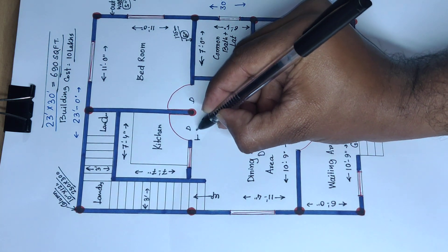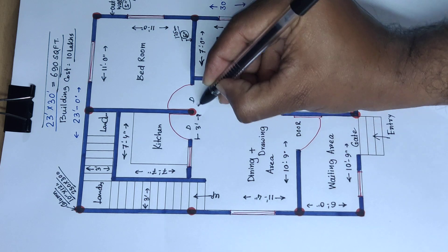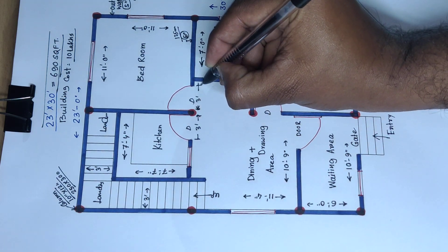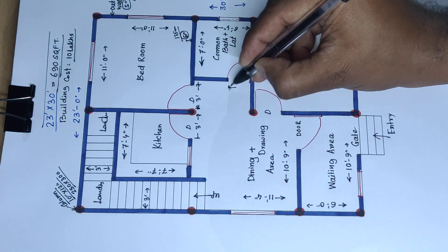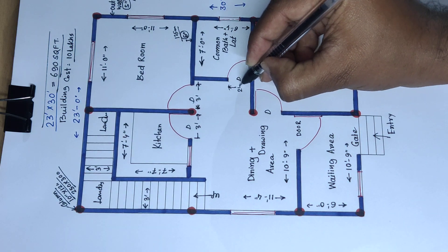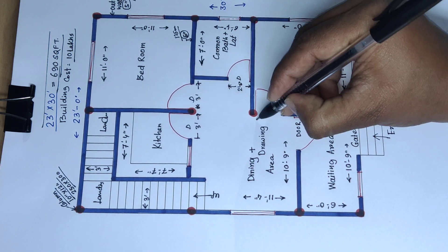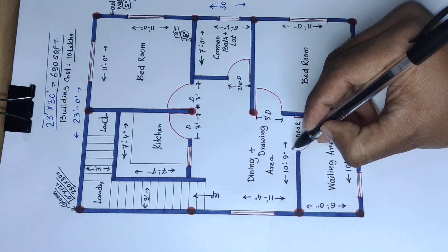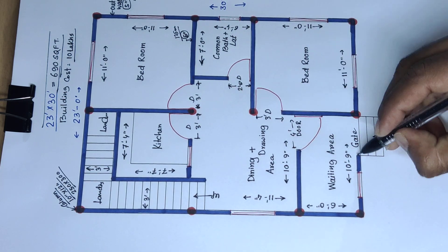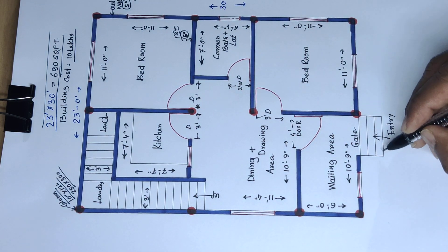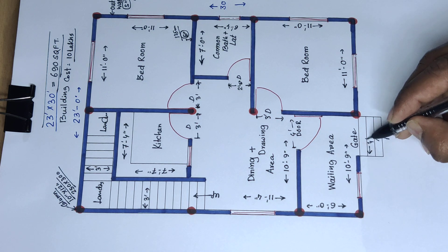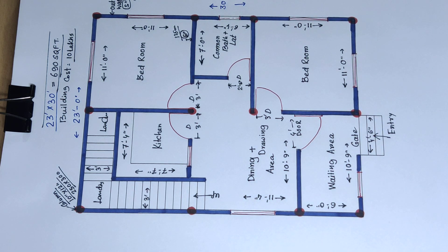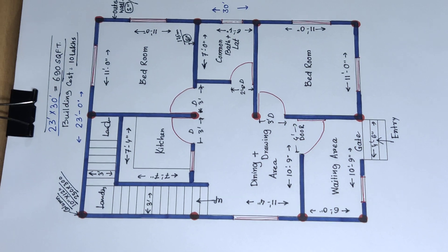This is 3 feet 4 inch and this is a 3 feet wide door. This side 3 feet wide door, this side 3 feet wide door, this side 4 feet wide door, and this side 4 feet 6 inch wide main gate. Thank you for watching this video.